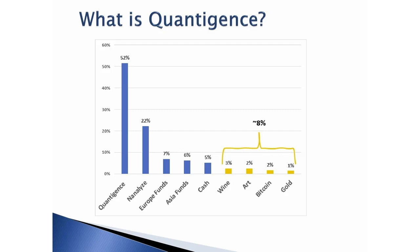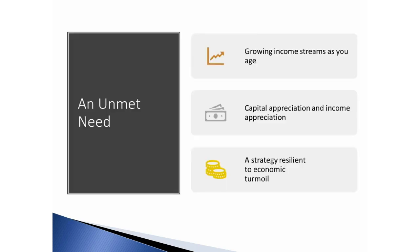Once we have that universe, we start to rank order the stocks based on the strength of the company and the company's capability to keep increasing that dividend over time. We reward those companies that increase the dividend with the highest growth rate. In order to rank the stocks and look at how they relatively perform, we put together what's called a Q score. Before we get into that, I wanted to talk about why we built Quantagent.